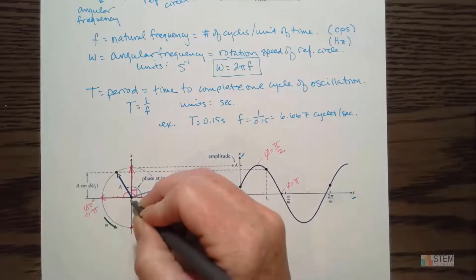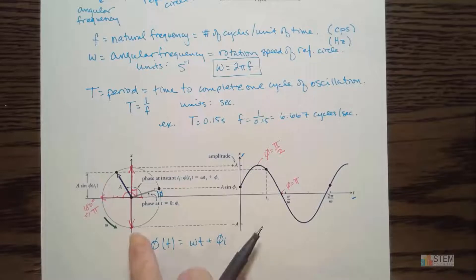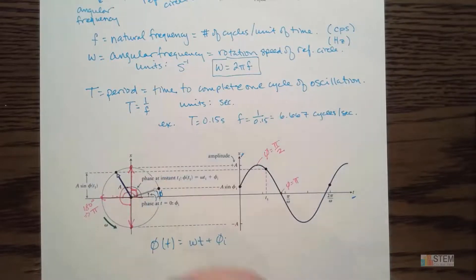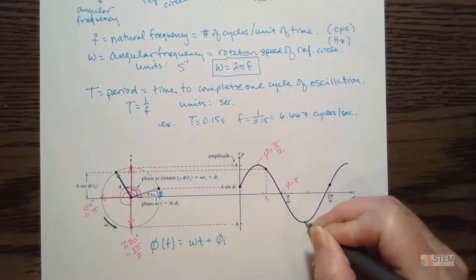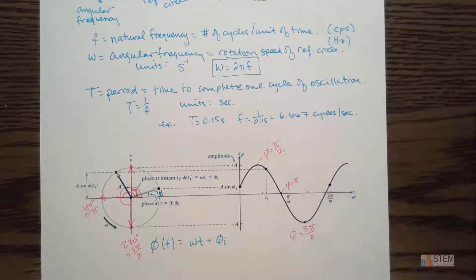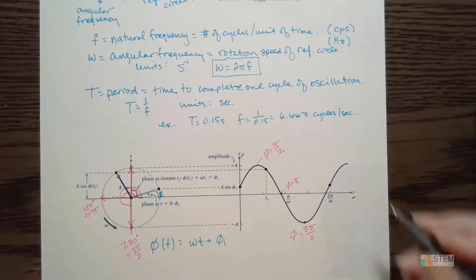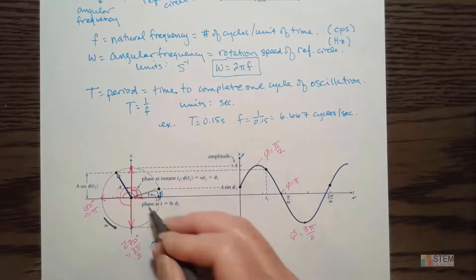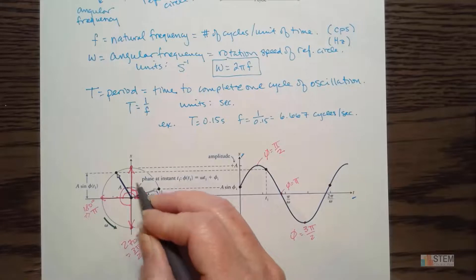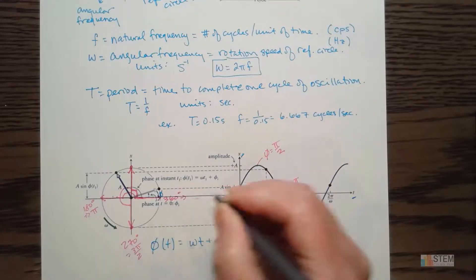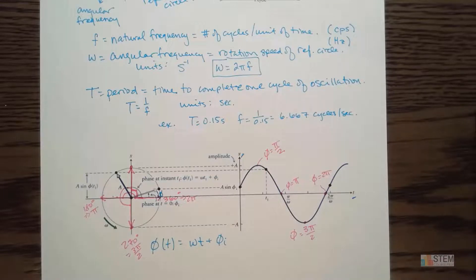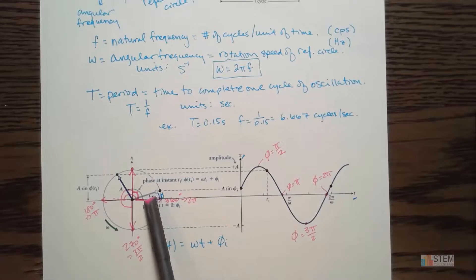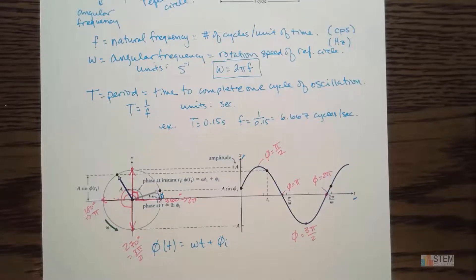If the phasor is located at the bottom, this whole angle would be 270 degrees, equivalent to 3 pi over 2. That corresponds to that point on the graph, so the phase for that point would be 3 pi over 2. And finally, when we've gone all the way around — back on the horizontal axis — that's 360 degrees, or 2 pi, so phi equals 2 pi.